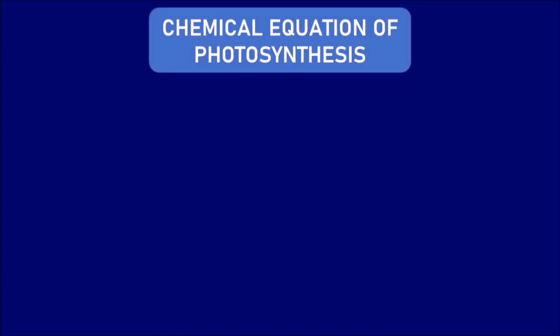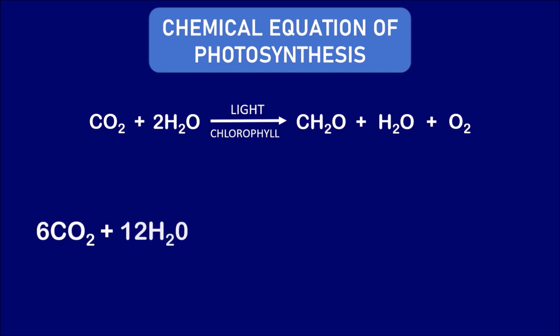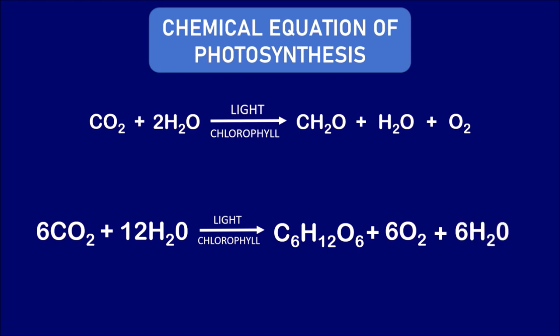A simple chemical equation for photosynthesis was proposed by C.B. Van Niel based on his observations: CO2 + 2H2O gives rise to CH2O + H2O + O2. This explains that one molecule of carbohydrate is formed along with one molecule of water and one molecule of oxygen. However, this is not a balanced equation. After several works, the final balanced chemical equation was proposed: 6CO2 + 12H2O gives rise to C6H12O6 + 6O2 + 6H2O.